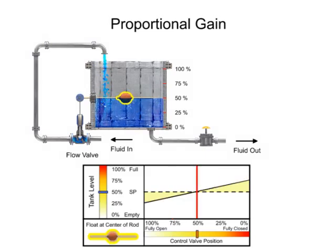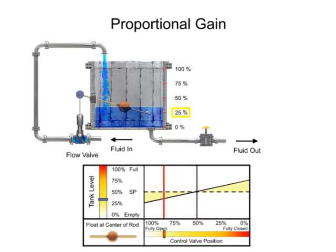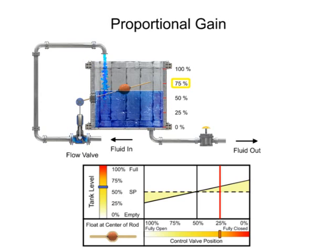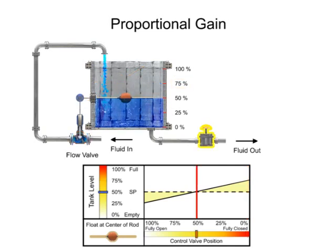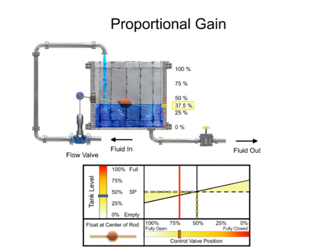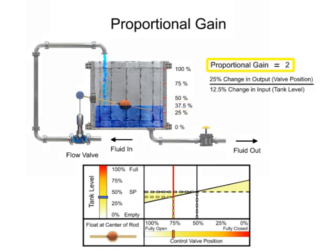Positioning the float to the midpoint of the bar increases the gain. The valve fully opens when the level drops to 25% and fully closes when the level rises to 75%. Opening the drain valve increases the load demand, which causes the tank level to drop by 12.5%, or to 37.5% full. The float drops and the valve opens 25%, which allows more fluid flow to enter the tank. A gain of 2 is demonstrated, since the 12.5% change of tank level resulted in a 25% change of valve position.